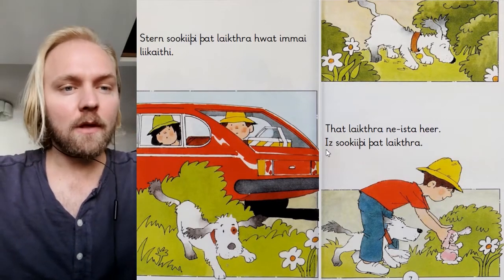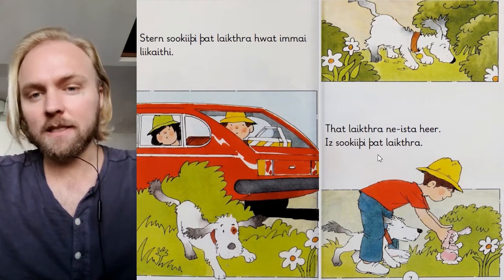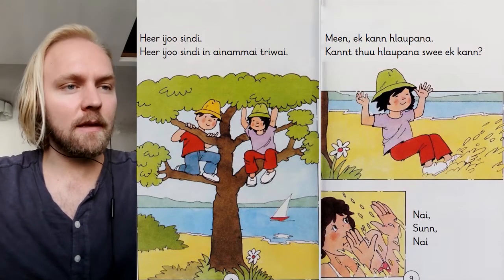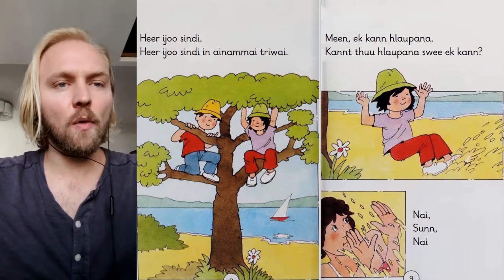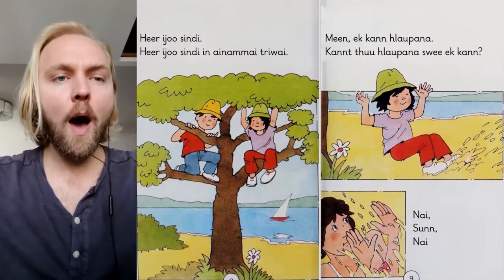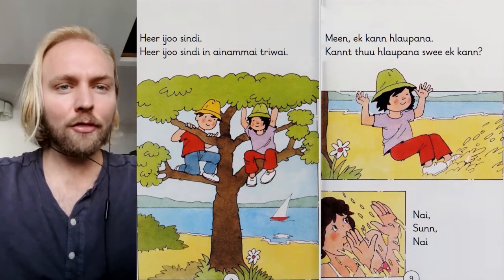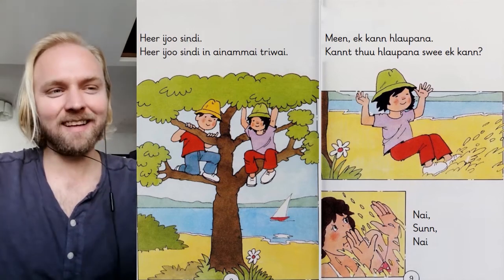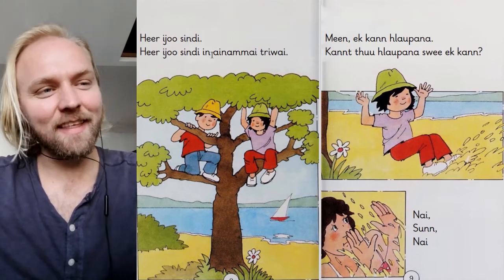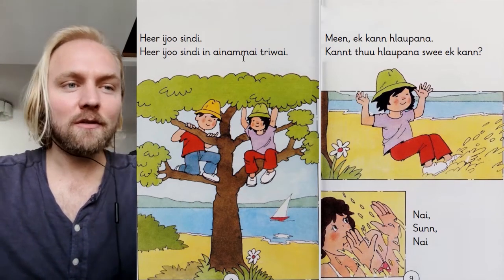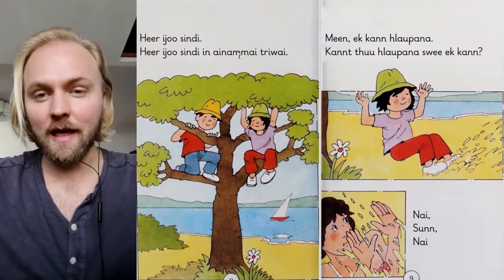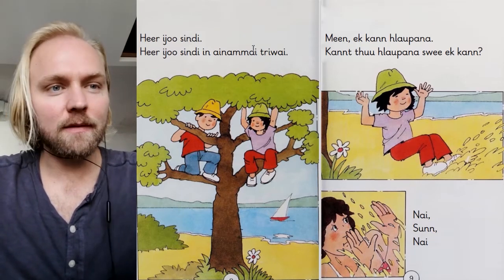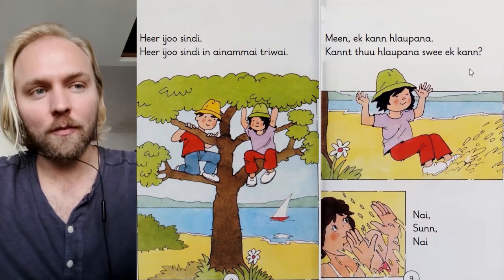They are in a tree — 'in a tree' is the dative neuter form. 'Moon, I can leap — can you leap like I can?' 'No, sun, no.'